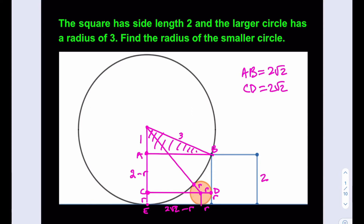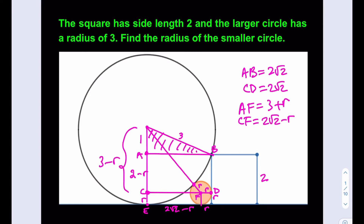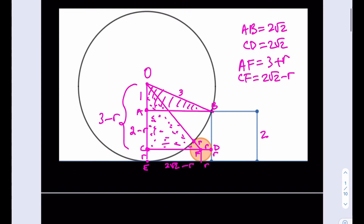So that length is 2 minus R. Now we know that this whole thing is 3, so the hypotenuse here — if you consider the larger triangle — is going to be 3 plus R. This length is going to be 3 minus R, and the hypotenuse is going to be — let's call this point F — OF is going to be 3 plus R, and CF is going to be 2√2 minus R. The only point we didn't mark was O. Let's call this O. Triangle OCF is a right triangle, and we know all the lengths in terms of R. So let's go ahead and use the Pythagorean theorem in that right triangle.